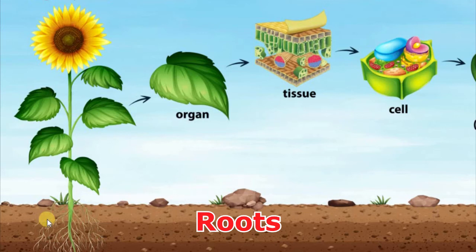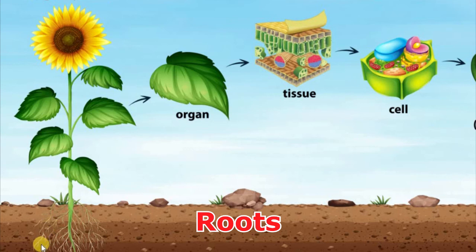The stem also transports minerals and water from the roots to the leaves. And finally, the roots — roots are organs that absorb minerals and water from the soil to send it to the leaves through the stem. Roots have root hairs, which are tiny hairs used to absorb those minerals and water.